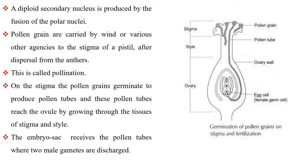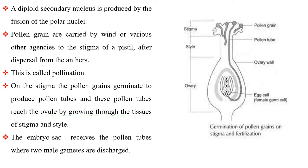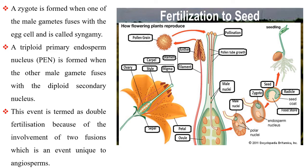Pollen grains are carried by wind or various other agencies to the stigma of a pistil after dispersal from the anthers. This is called pollination. On the stigma, the pollen grains germinate to produce pollen tubes and these pollen tubes reach the ovule by growing through the tissues of the stigma and style. The embryo sac receives the pollen tubes where two male gametes are discharged. A zygote is formed when one of the male gametes fuses with the egg cell, and this is called syngamy. The triploid primary endosperm nucleus (PEN) is formed when the other male gamete fuses with the diploid secondary nucleus. This event is termed double fertilization because of the involvement of two fusions, which is an event unique to angiosperms.